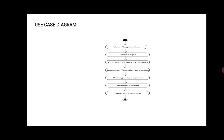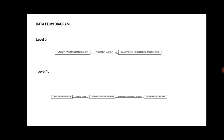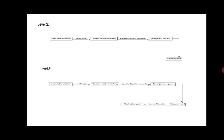In the data flow diagram at Level 0, user authentication and verify user steps track the current location. At Level 1, user authentication is verified by the DB server, current location is tracked, and location is transferred to the station, and the emergency request is accepted. At Level 2, emergency request is deployed and redeployment occurs. At Level 3, redeployment happens and the location is received, redirecting the request.